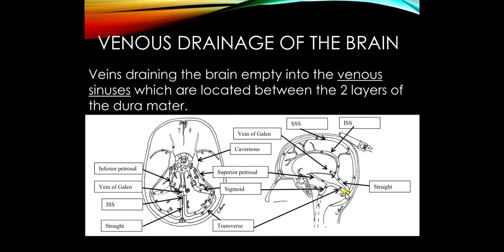On this sagittal drawing, the transverse sinuses are hard to appreciate — one is coming out toward you, the other going away, so they are moving out laterally. From the transverse sinus, drainage empties into the sigmoid sinus, then down into the internal jugular vein and out.